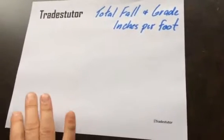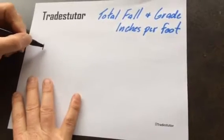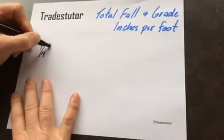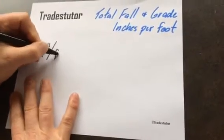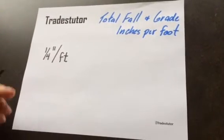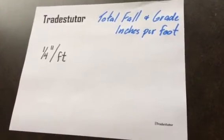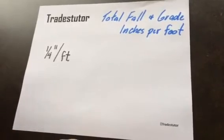Okay, so let's say you want to run a piece of pipe and you've been told you have to run at a quarter inch per foot. How do you calculate that or how do you deal with how much fall you're going to have given this grade?